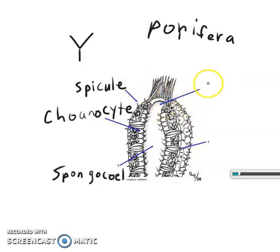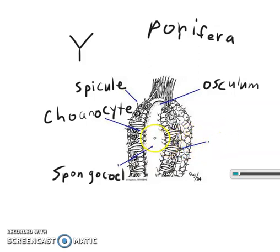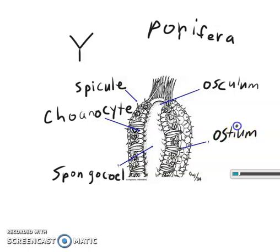Then we have the osculum — this is the exit where all the water and other things that the sponge pumps in through its ostium exits out of. The ostium is the last part where water, nutrients, and things enter in through the sponge and then out through the osculum.